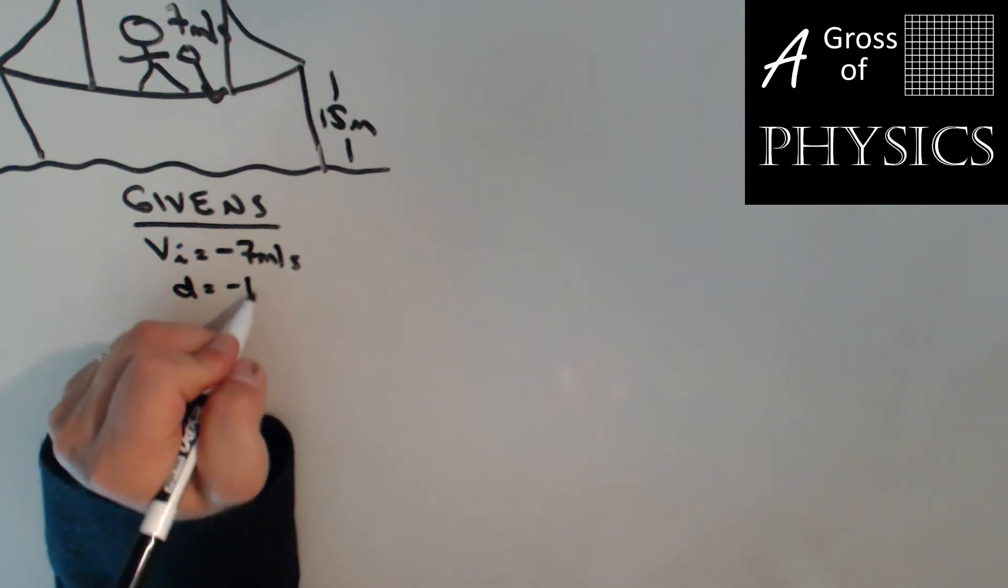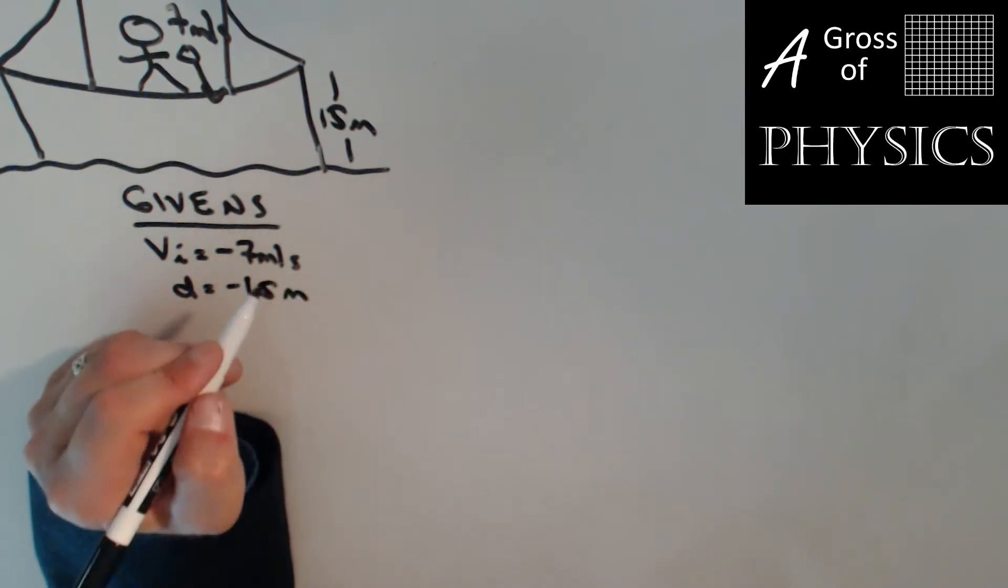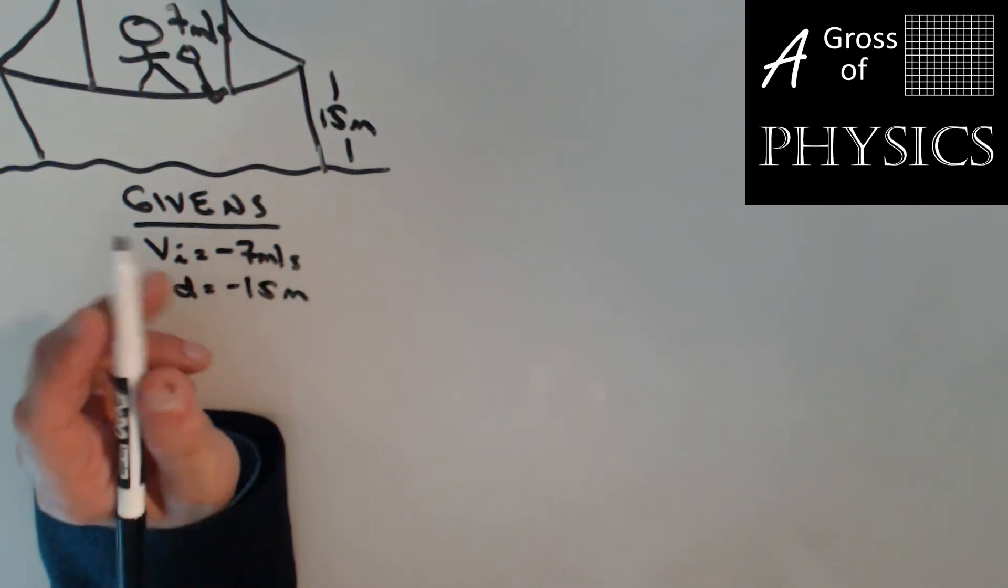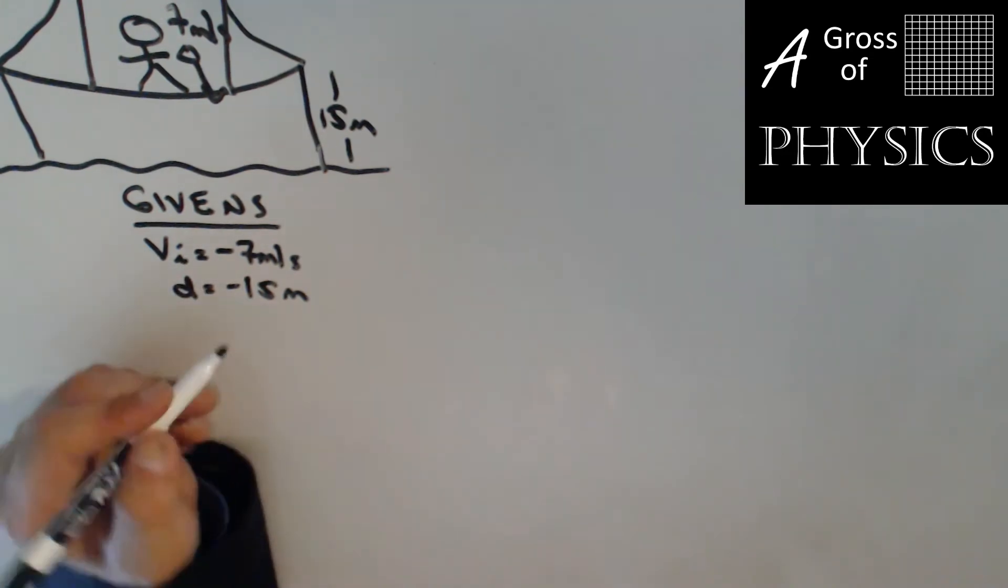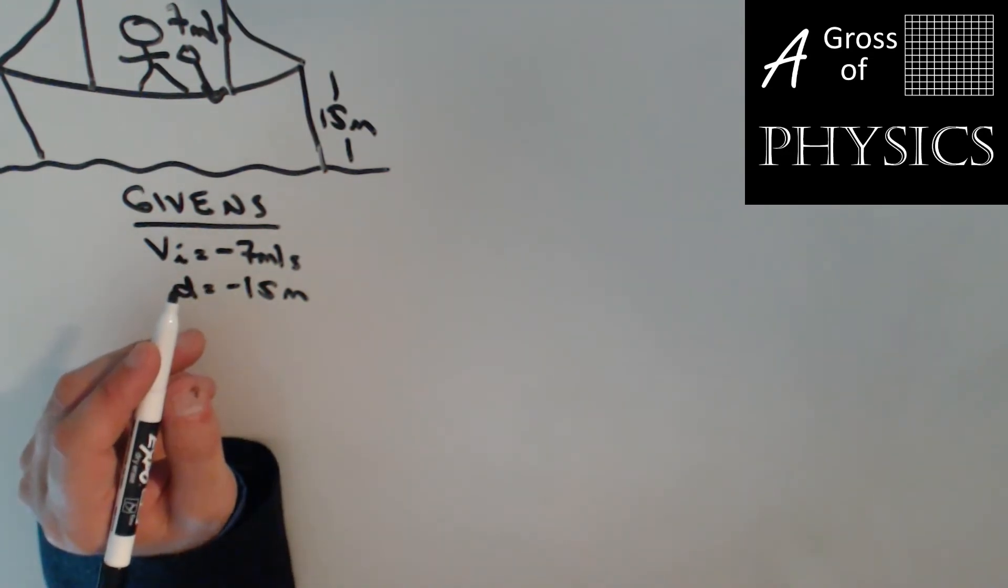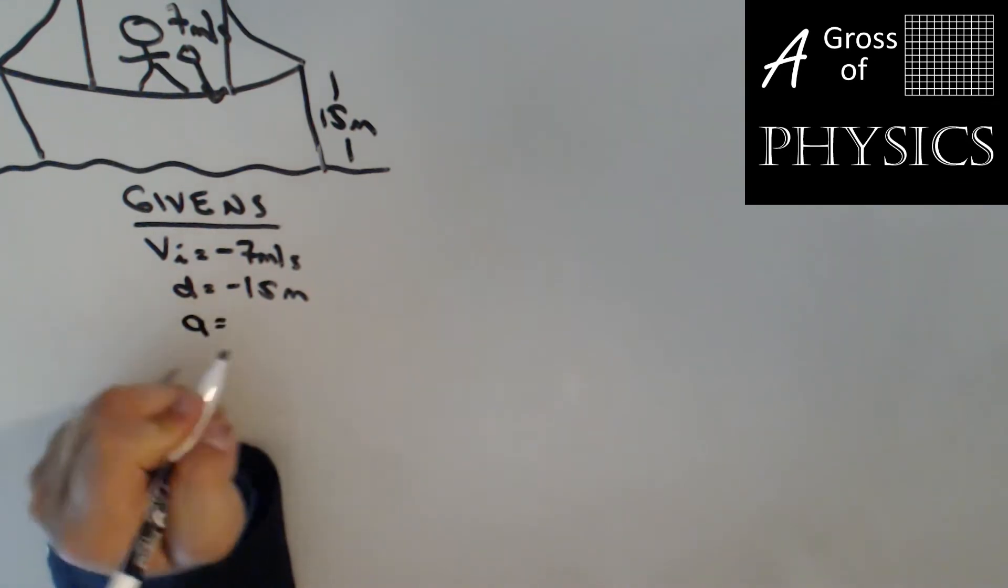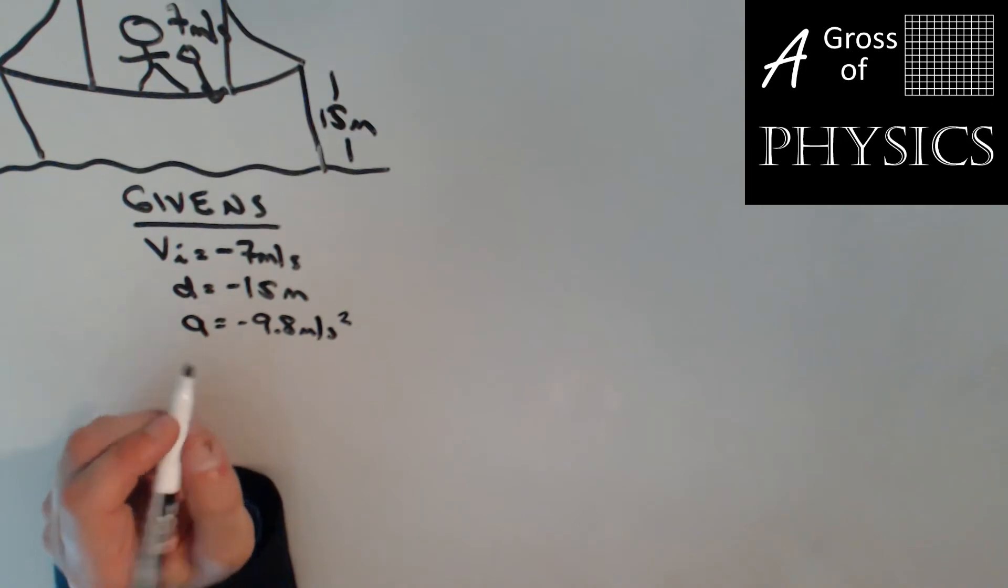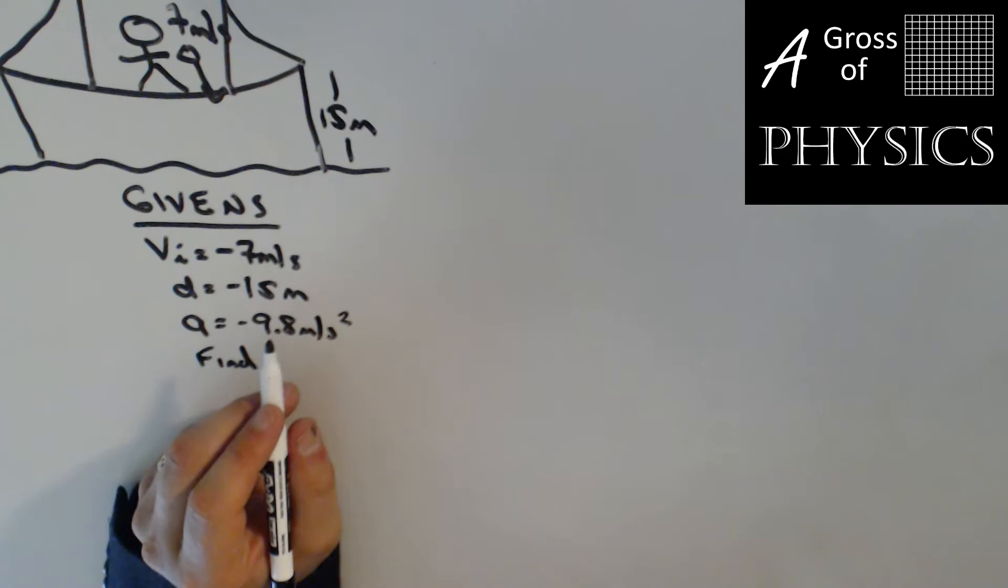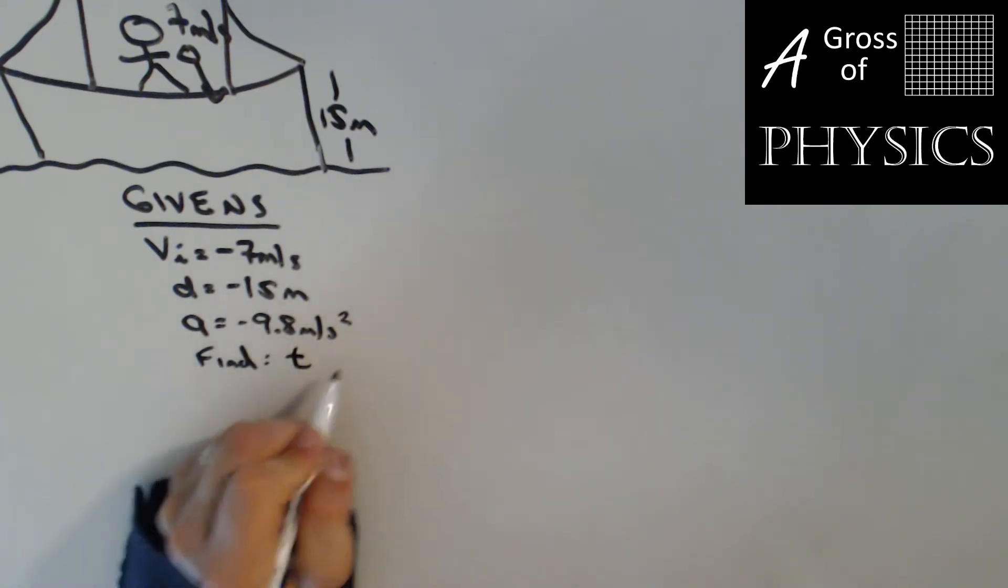The displacement is negative 15. It's going to move downward. Although the bridge is going to be listed with a height, a positive height, the displacement of the golf ball is going to be negative 15. The other information is that we're on the Earth's surface, negative 9.8 meters per second squared. We want to find two things in this problem: how long and how fast, so t and vf.